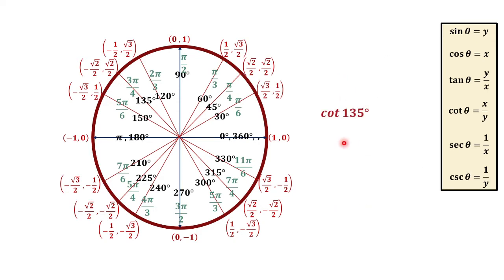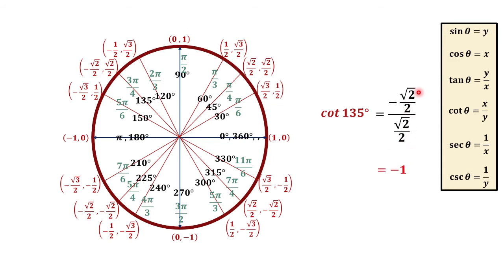For cotangent 135 degrees, cotangent is equal to x over y. In reference to 135 degrees, x is negative square root of 2 over 2 and y is square root of 2 over 2. Dividing these fractions, we get negative 1.